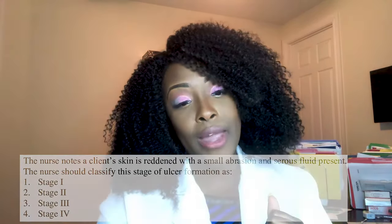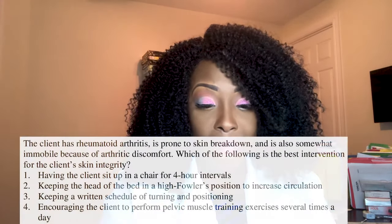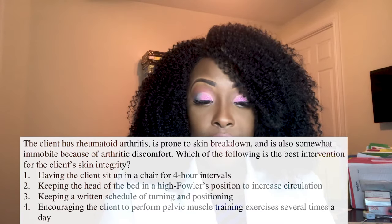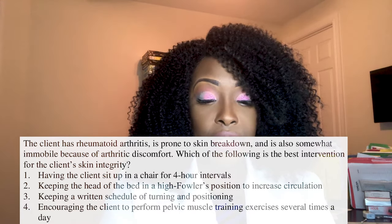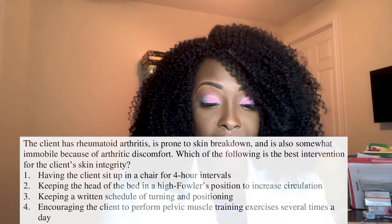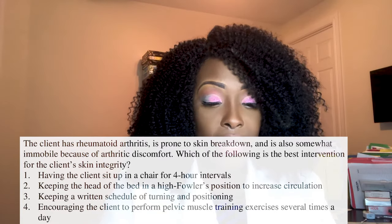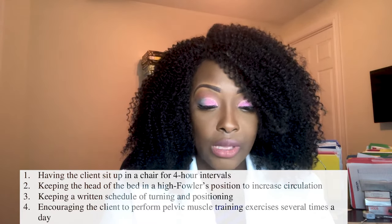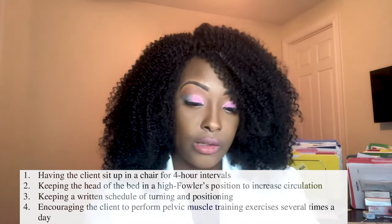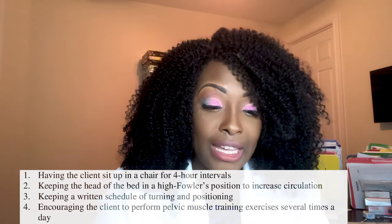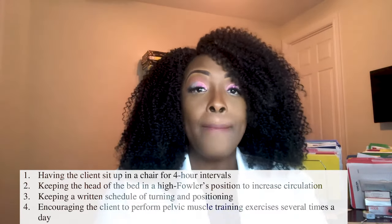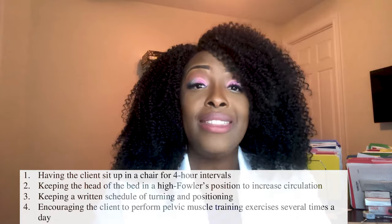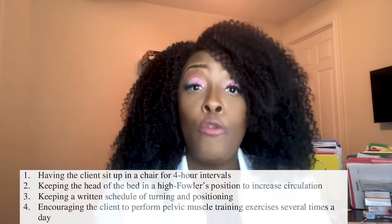Next question: a client with rheumatoid arthritis is prone to skin breakdown and is somewhat immobile due to arthritic discomfort. Which of the following is the best intervention for the client's skin integrity? The correct answer is keeping a written schedule of turning and repositioning the client. When you keep that schedule, you ensure the patient is turned and repositioned at least every two hours, which means pressure is not being applied to any given site for more than a maximum of two hours at a time.